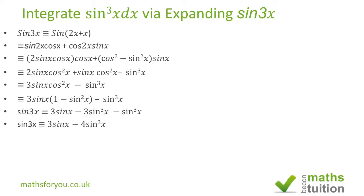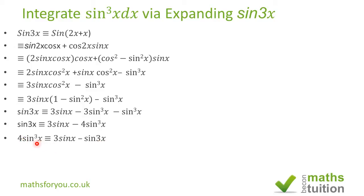When 4 sine cubed x goes across to the left hand side the sign will change, and sin 3x comes across to the right hand side with its sign also changing. So we end up with 4 sin cubed x equals 3 sin x minus sin 3x. If we divide both sides by 4, we end up with sin cubed x equals three-quarters sin x minus one-quarter sin 3x.